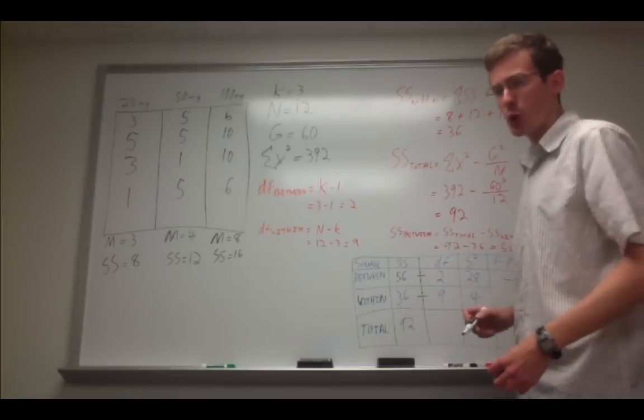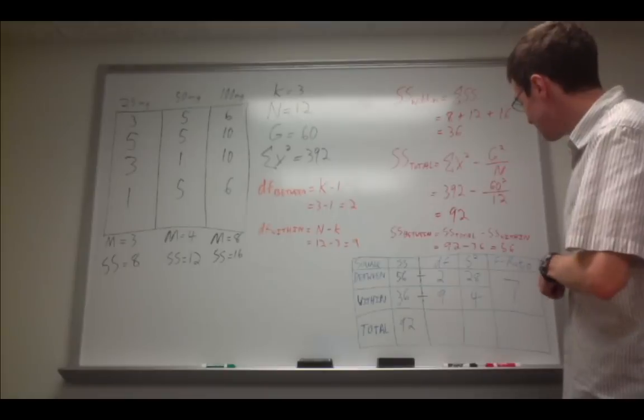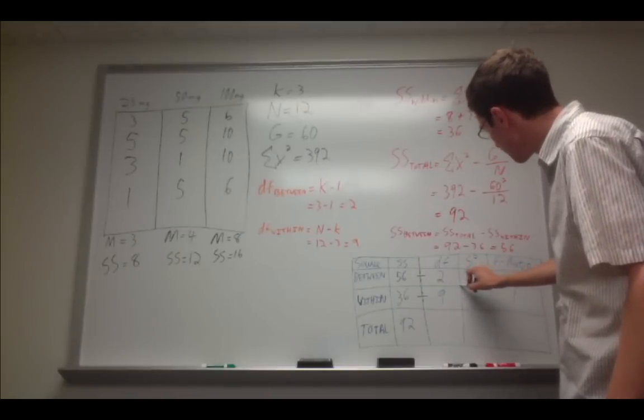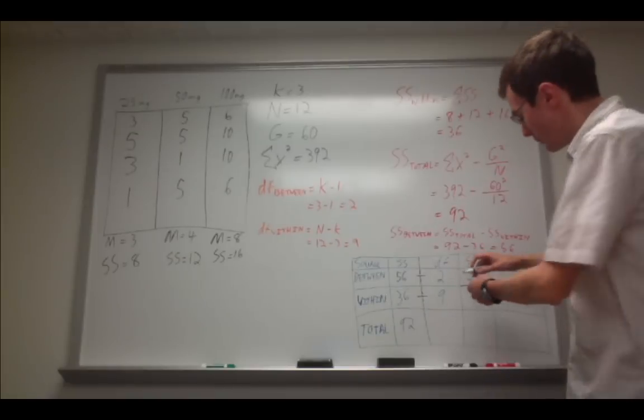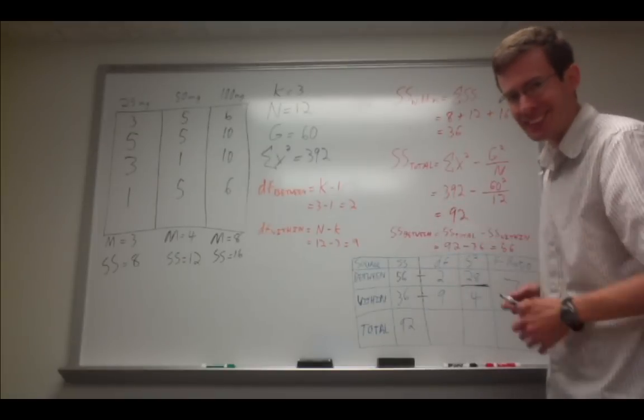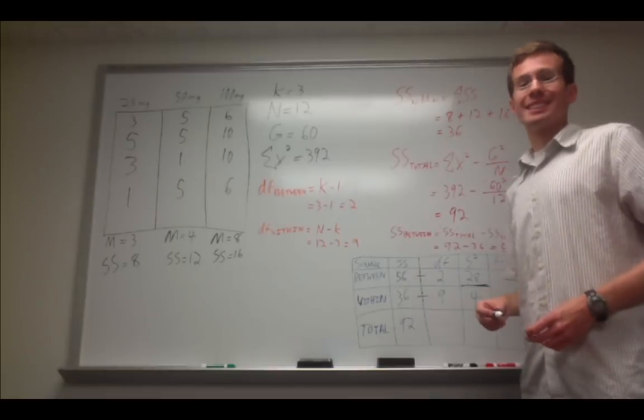You may also see this referred to as mean squares. Once you have that, simply take the ratio of these two right here. 28 divided by 4. I hope that their location makes that an easy operation to remember. You get an F ratio of 7.